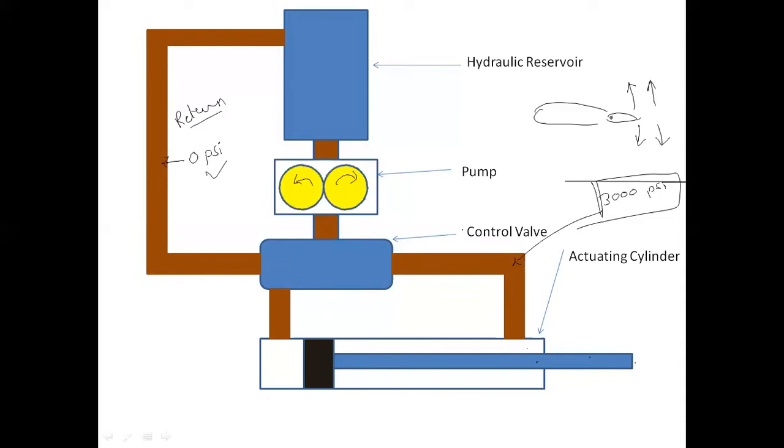This high pressure fluid will enter the control valve where it has been decided to see which side of the actuating cylinder this fluid will go. Who will decide this? The pilot will decide it.